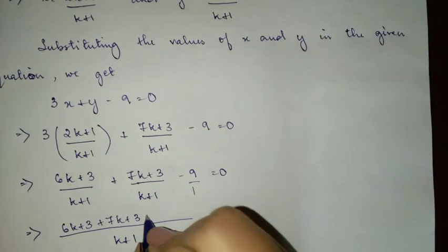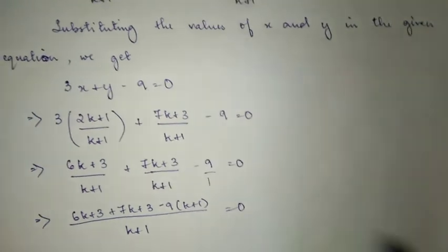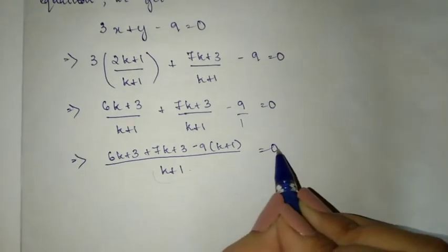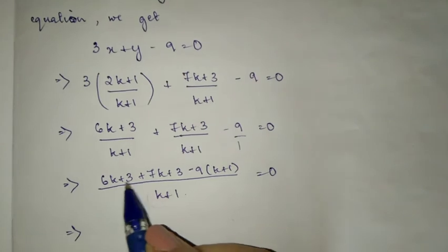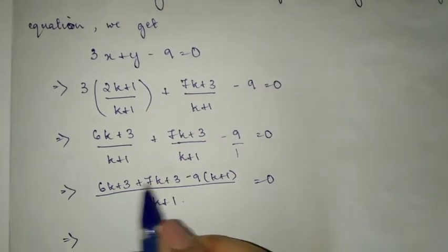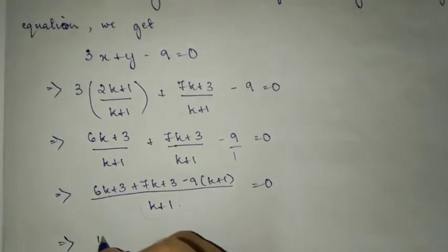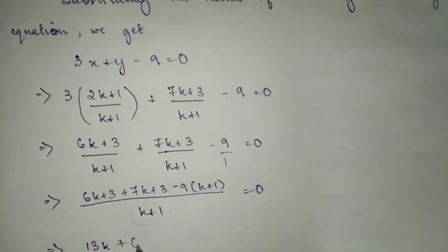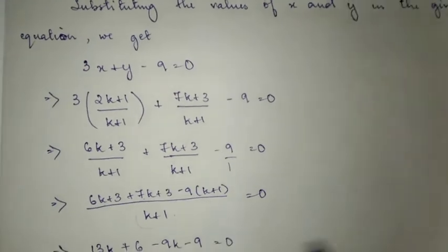Opening brackets: 7 plus 6, multiplying gives 13k. Plus 3 plus 3 equals 6. So we have 13k + 6 minus 9 equals 0. This simplifies to 13k minus 3 equals 0, which means 13k equals 3.